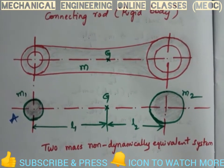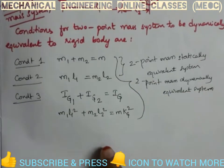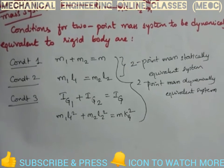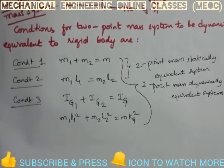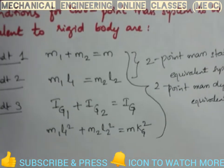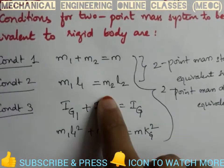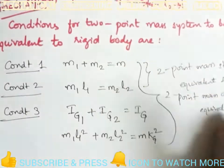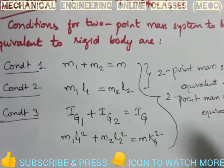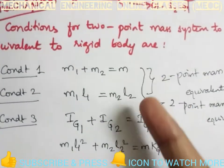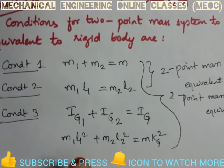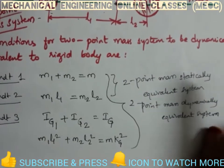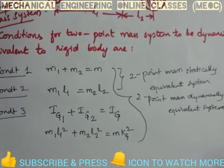We can still see that the first two conditions are satisfied. We can split the masses such that the sum of masses equals the mass of the connecting rod, and we can also select M1 and M2 such that M1·L1 equals M2·L2. Since M, L1, and L2 are all known, we can solve for M1 and M2 from these two equations. But the third condition will not be satisfied.